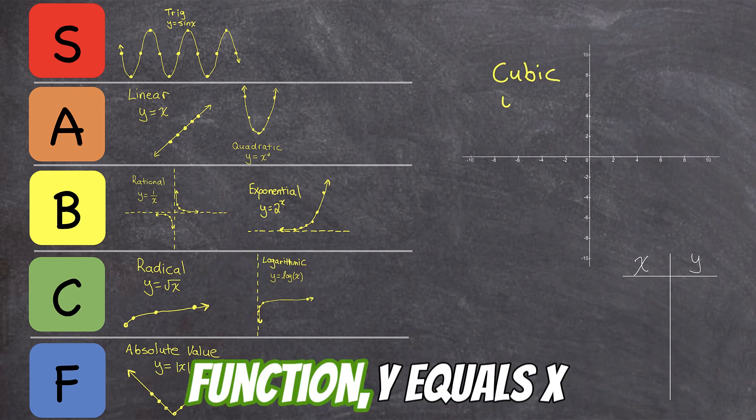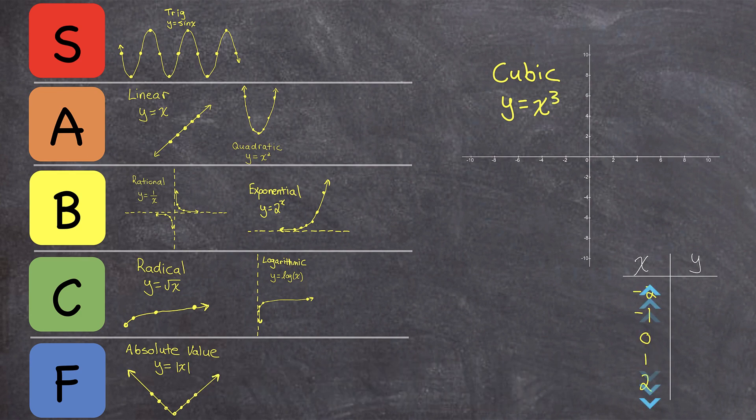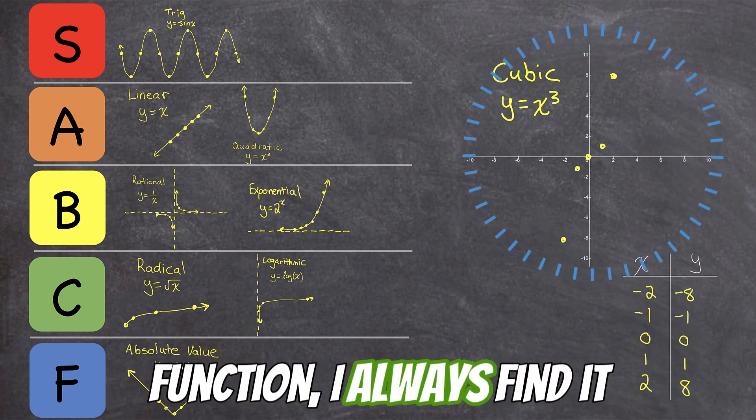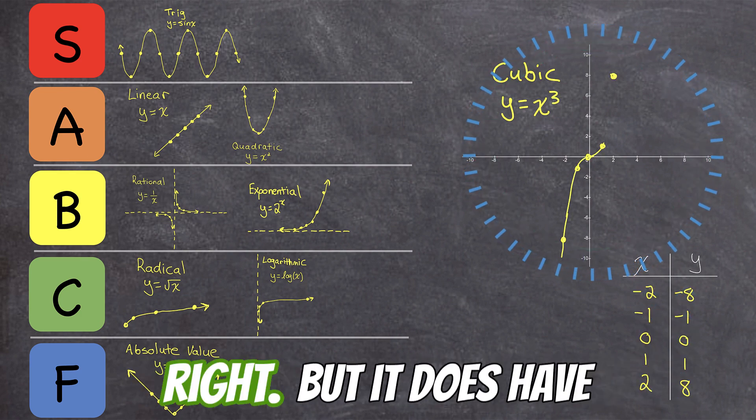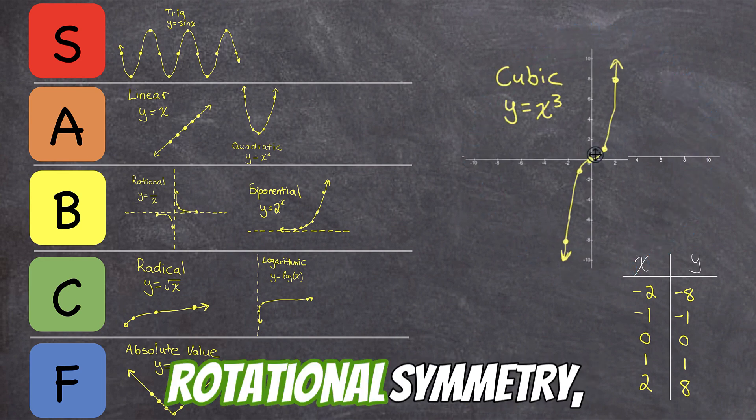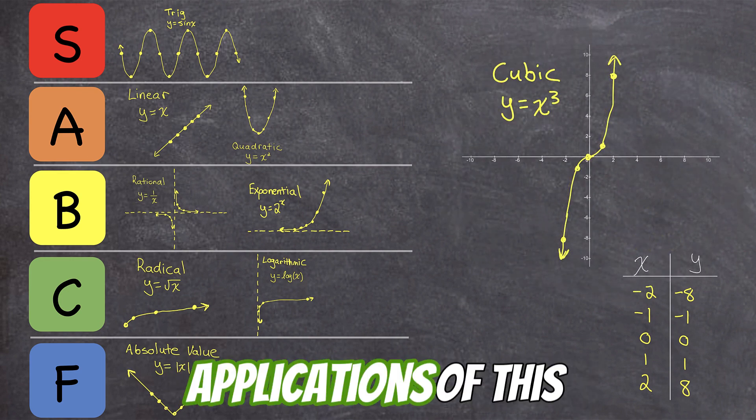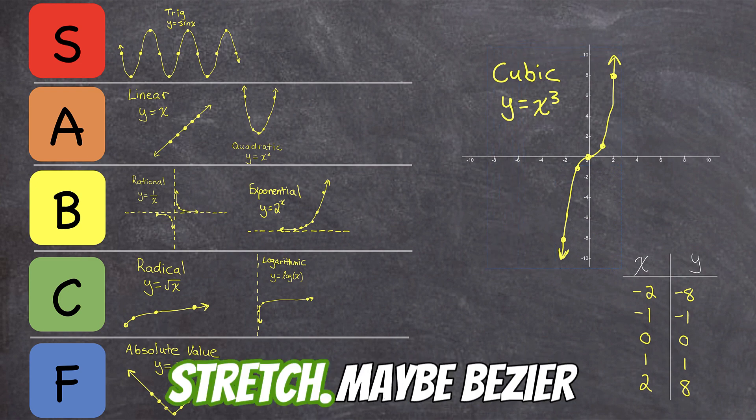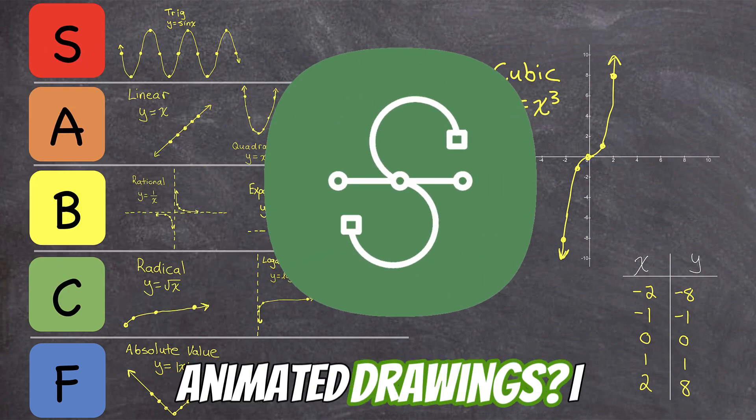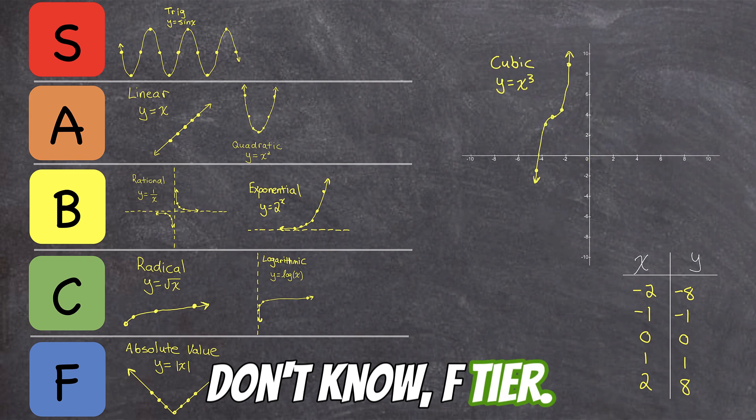Next up, we have the cubic function, y equals x cubed. When graphing this function, I always find it hard to get the curve just right. But it does have rotational symmetry, which is kind of neat. But finding cool applications of this function is a bit of a stretch. Maybe Bézier curves for computer animated drawings? I don't know. F-tier.